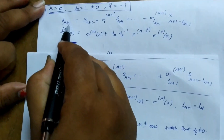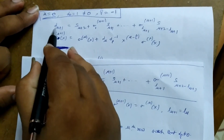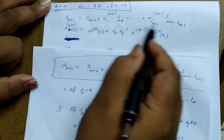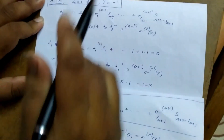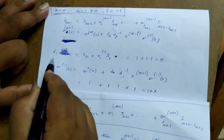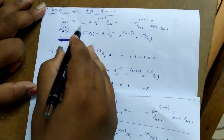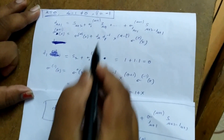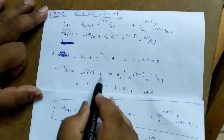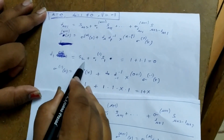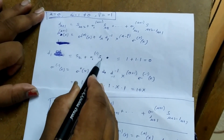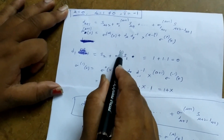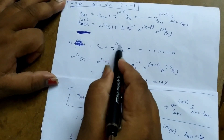In either case we compute d_{μ+1}. Whether d_μ=0 or d_μ≠0 we use the same formula. For μ=0, d1 is d_{μ+1}, which equals s_{μ+2} + σ_1(1)·s_{μ+1}. With μ=0 this is s2 + σ_1(1)·s1. The syndrome vectors s2 and s1 are familiar; σ_1(1) is the coefficient of x in the error locator polynomial σ_1(x).